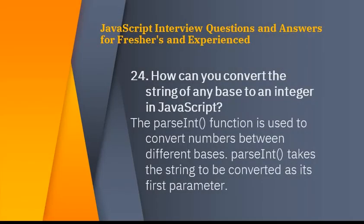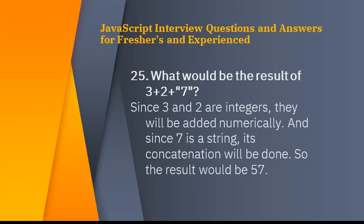How can you convert a string of any base to an integer in JavaScript? The parseInt function is used to convert numbers between different bases. It takes the string to convert as the first parameter. What would be the result of 3 + 2 + '7'?